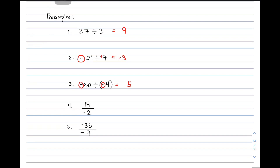So in item number 4, as you can see, fractional form yan, pati sa item number 5. Another way on how to represent dividing integers — at may encounter nyo yan sa grade 7. Here in your numerator the sign is positive and your denominator has the sign of negative. Since magkaiba sila, the quotient is negative. Simplifying 14 divided by 2, that will give you negative 7 — that is the answer for item number 4.